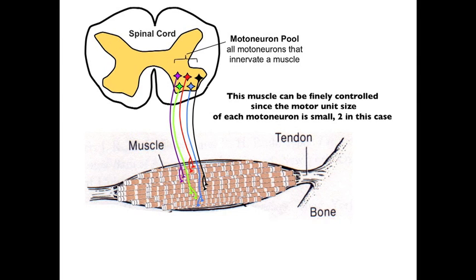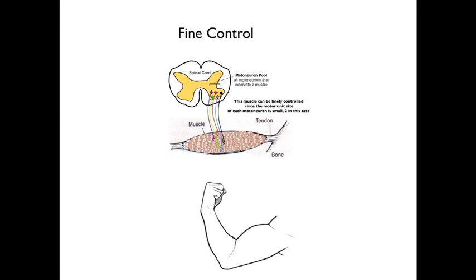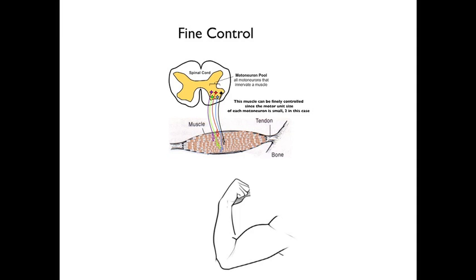Finally, there are muscles that are capable of very fine control. Examples are the muscles that control our fingers, our lips and mouth, and those that control our extra-ocular eye muscles — the muscles that move our eyes. These muscles have large motor neuron pools, and each motor neuron has a very, very small motor unit size, with sizes that can be as small as one, which means that each motor neuron innervates only one muscle fiber. In this illustration, the motor unit size of each motor neuron is two. What this imparts is a very fine control over muscle movement, since the recruitment of each motor neuron generates only a small contraction increment.